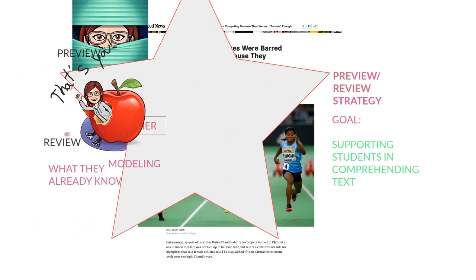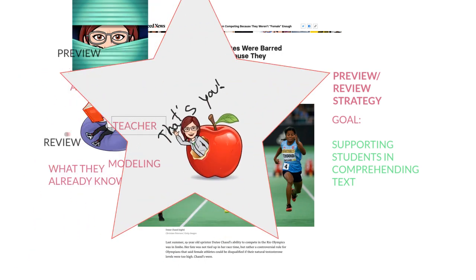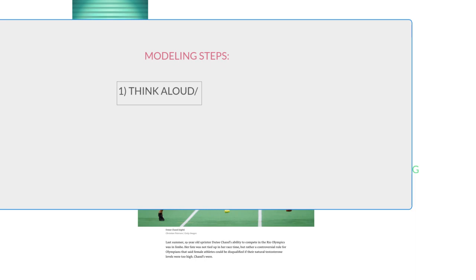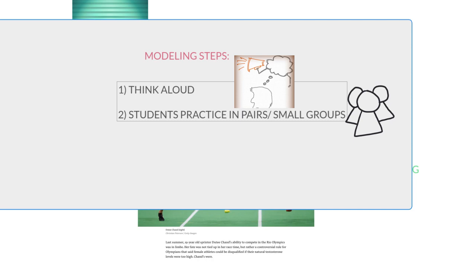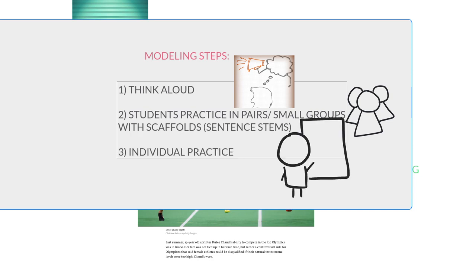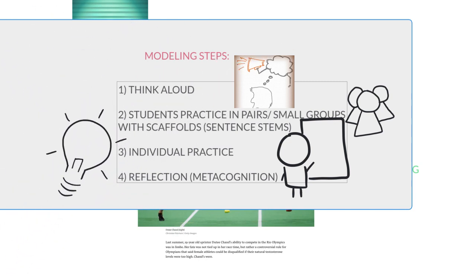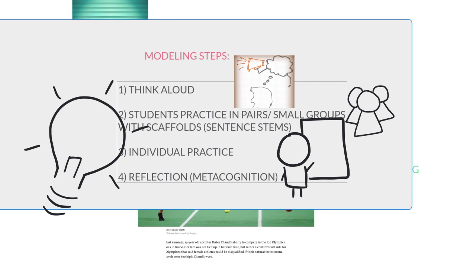It is really important to model the strategy for your students before you use it, especially for the first time. You're going to be modeling through a read-aloud, think-aloud. Students then practice the strategy in pairs or small groups with scaffolds — specifically sentence stems that you'll see in a moment. Then students practice on their own. Finally, students reflect on what they did. The metacognition part is very important so students can reflect on what went well, what didn't, and how to improve for next time.